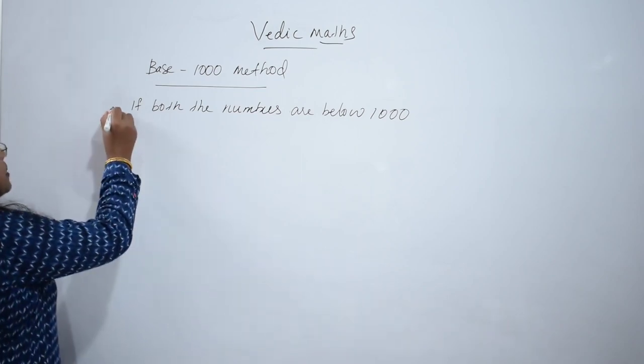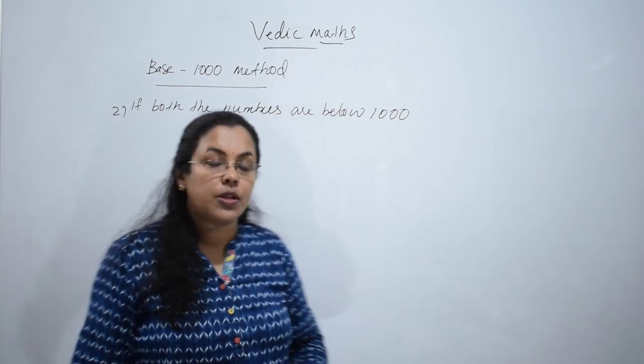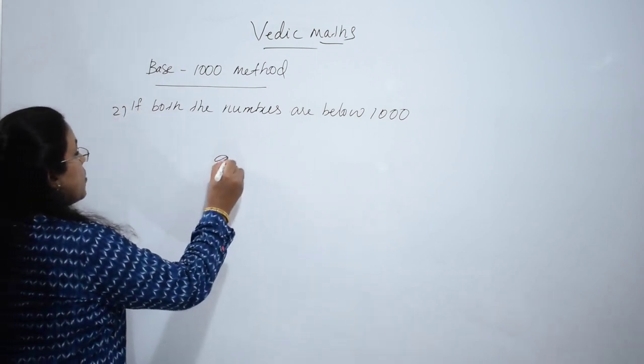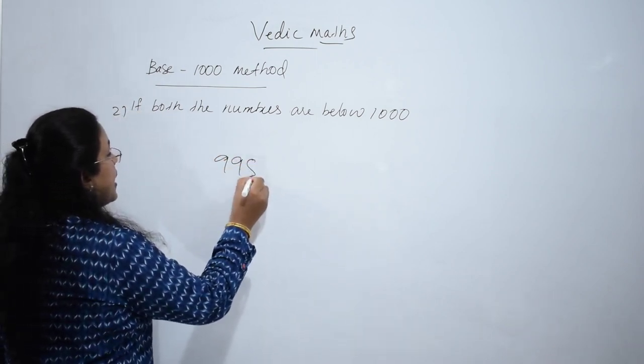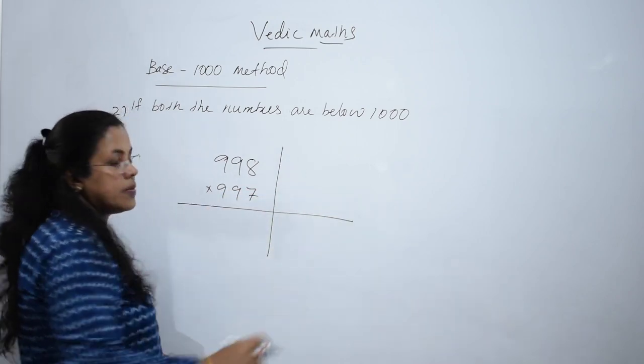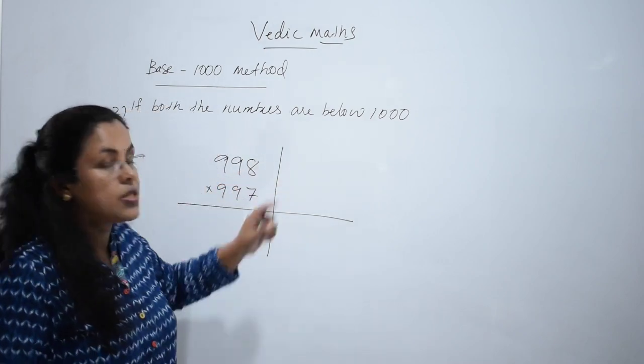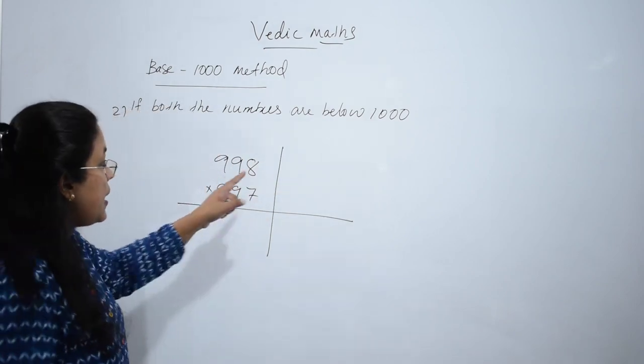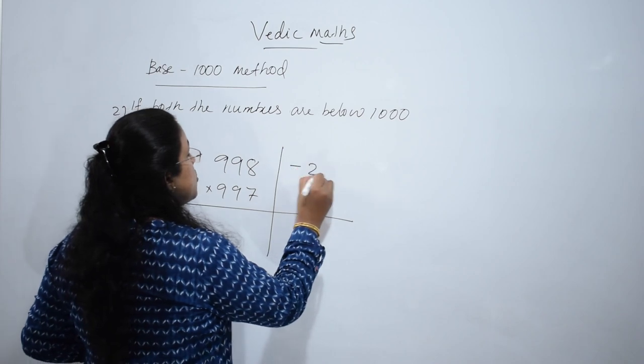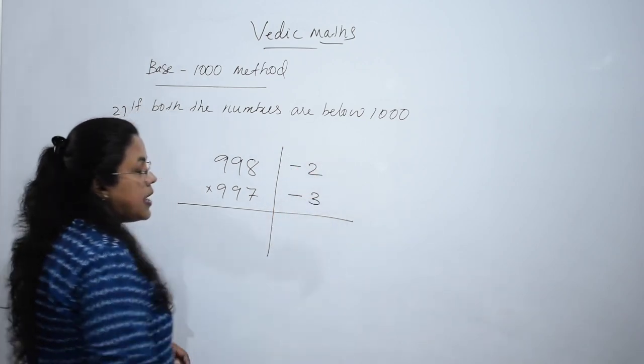Now case 2, if both numbers are below 1000. Suppose we are going to multiply 998 by 997. It is the same as base 100 method. Write the deviations from 1000. 998 is 2 less than 1000, and 997 is 3 less than 1000.